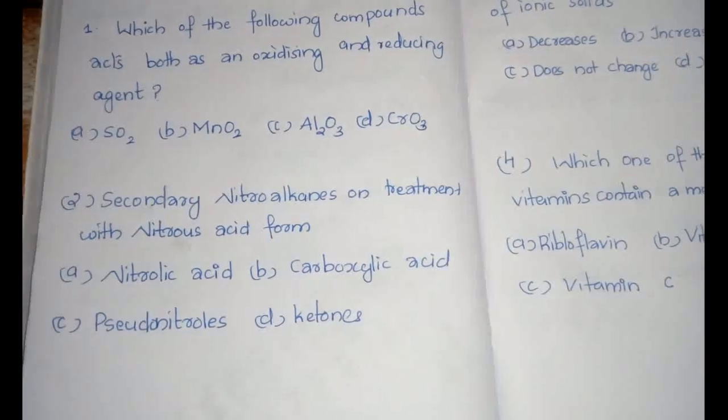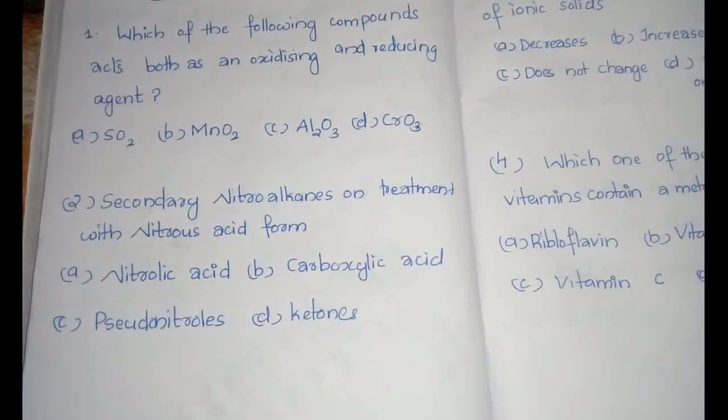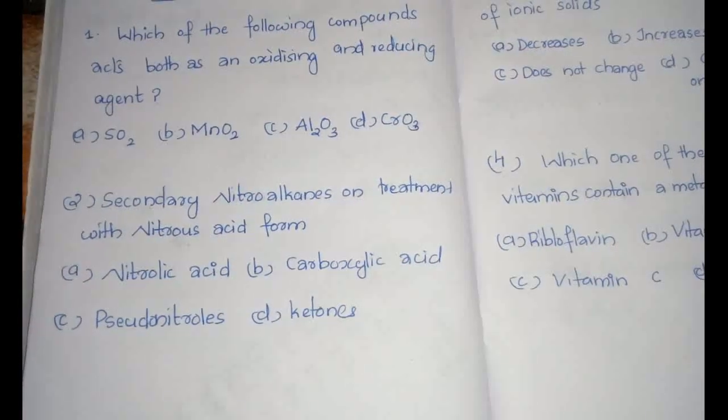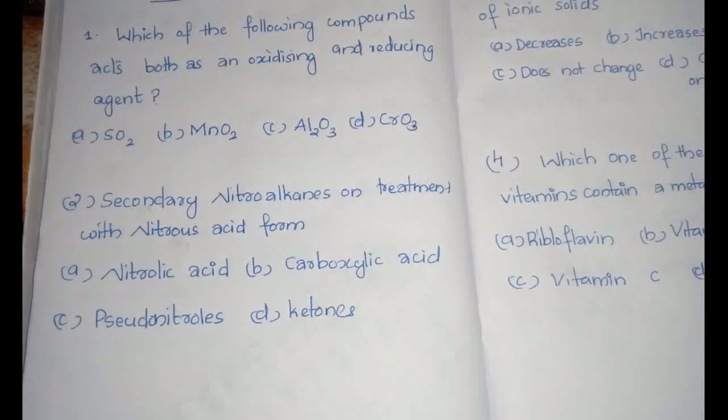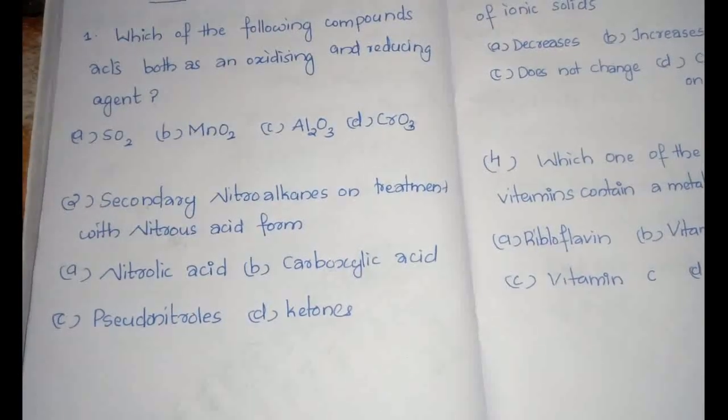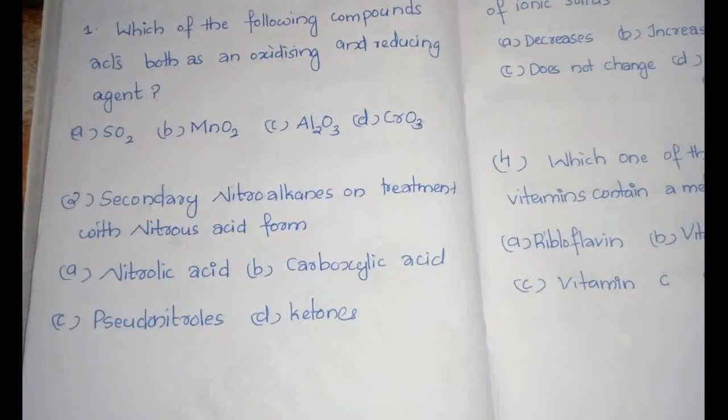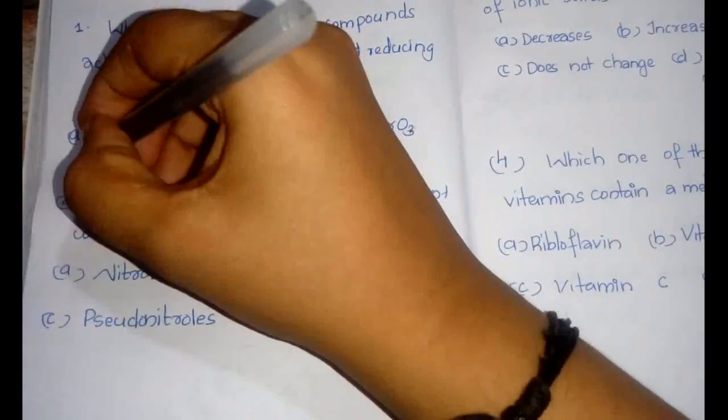Hello dear students, today we are going to do some practice questions for BITSAT and previous BITSAT entrance examinations. The first question is: which of the following compounds acts both as an oxidizing and reducing agent? This question is from the chapter of main group elements and the answer is SO2.